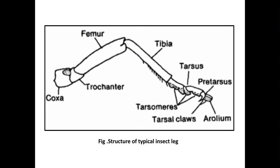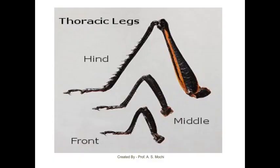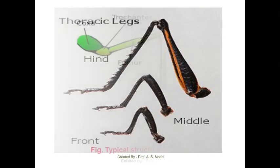The insect leg ends into the pretarsus, and at the end of the pretarsus there is a two claw-like structure, and in between the two claw-like structures there is an arolium or cushion-like structure. These are the three pairs of insect legs: front legs, middle legs, and hind legs.